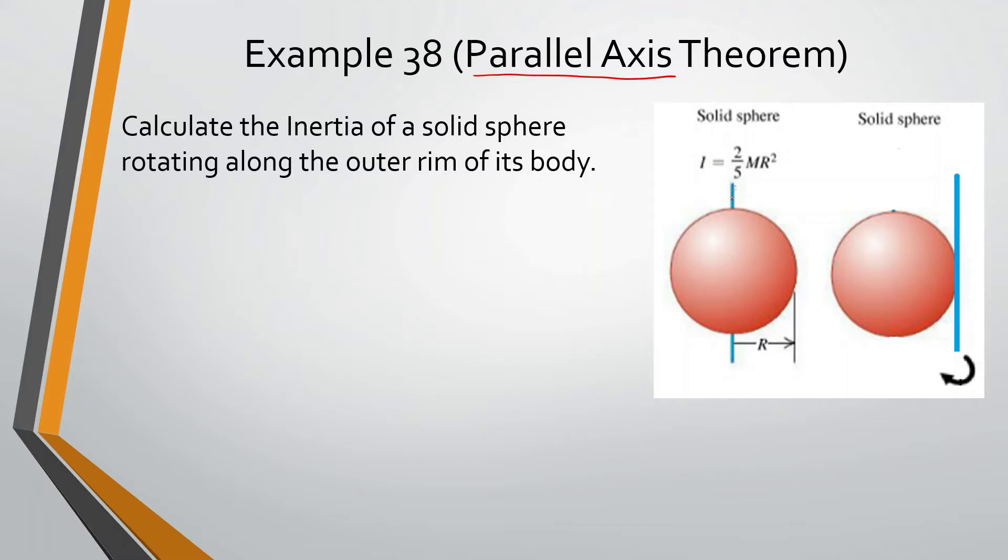So many times what's given to you is the inertia of an object if it's rotating around its center of axis. However, if it's rotating at a different spot, let's say at the edge, we want to be able to figure out what's the inertia now at this spot. It's the same mass, same object, but now it's rotating around a different axis point.